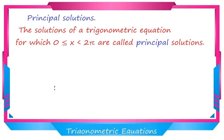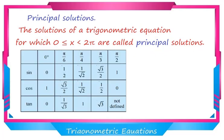The solution of a trigonometric equation for which 0 is less than or equal to x and x is less than 2π — note that 2π is not included — are called principal solutions.